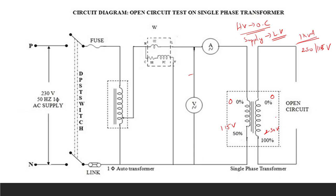In the supply side we are going to measure the no-load current I0, the no-load voltage V0, and the no-load power W0 or WC — the core losses. So we are going to use an ammeter, voltmeter, and a wattmeter.